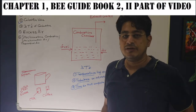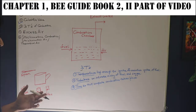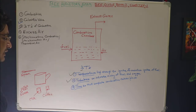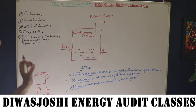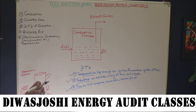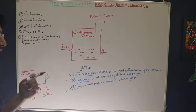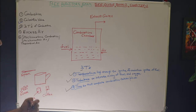Now we will have a look at what the three T's of combustion are. The three T's of combustion are: first, temperature; second, turbulence; and third, time. For each fuel we have a minimum temperature that has to be attained so that ignition of that fuel can take place, and that temperature has to be maintained so as to keep combustion continuous.